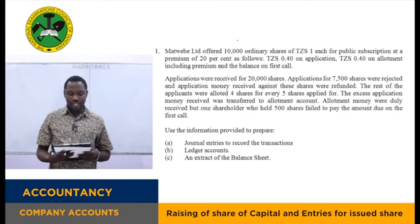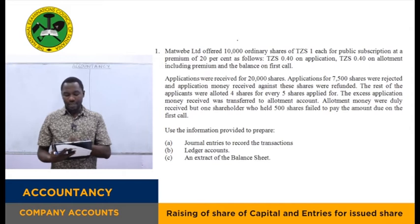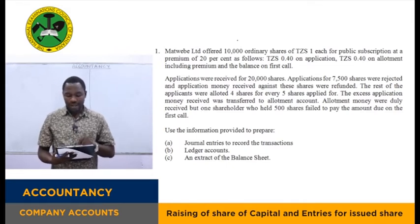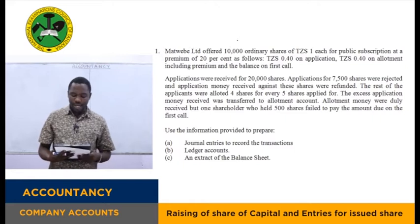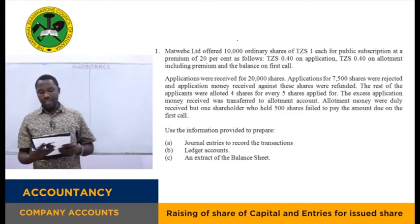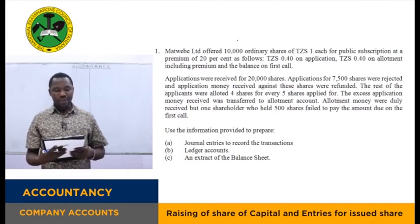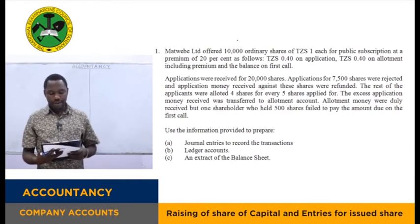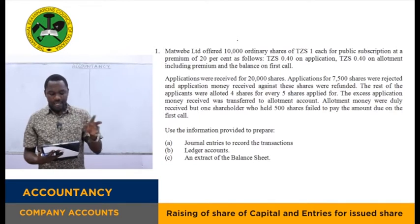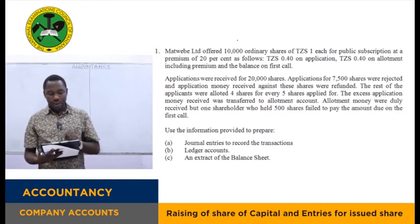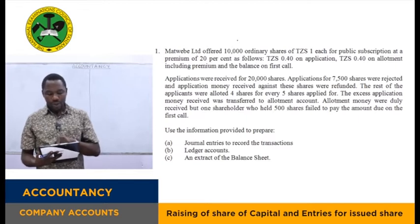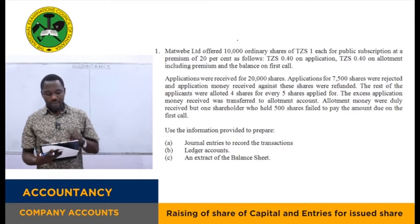The rest of the applicants were allotted four shares for every five shares applied for, and the excess application money received was transferred to the allotment account. The allotment money was duly received, but one shareholder who held 500 shares failed to pay the amount due on the first call.